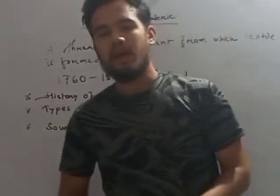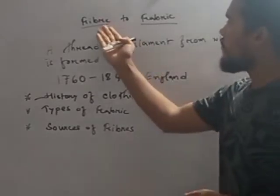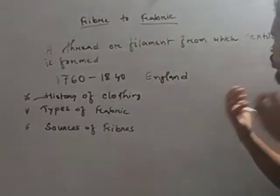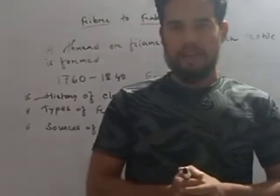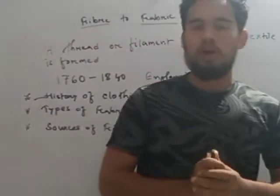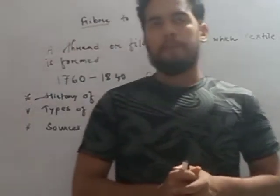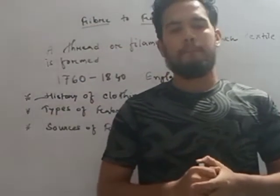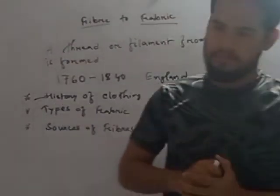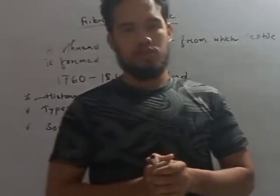Now, two terms are there. One is fiber and another is fabric. Fiber is a thread or filament from which textile or cloth is formed — a filament from where the textile, cloths, or yarn is formed. The meaning of fabric is a complete cloth or a piece of cloth.